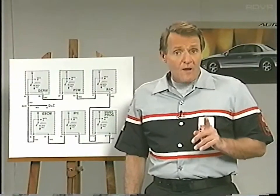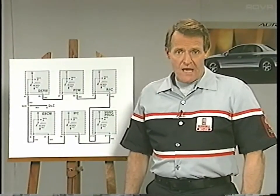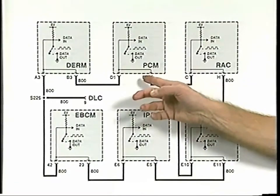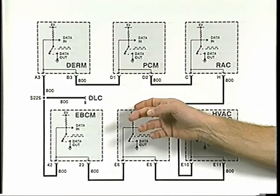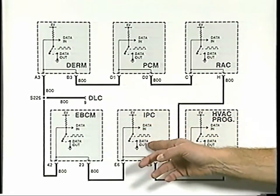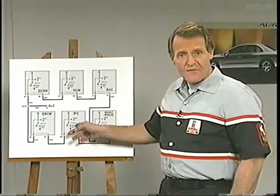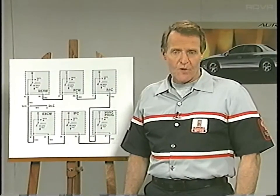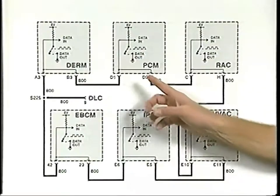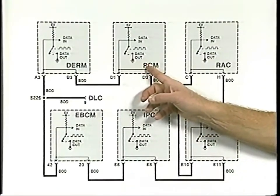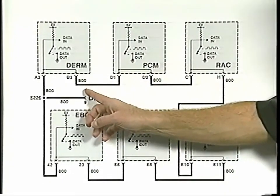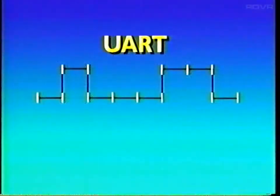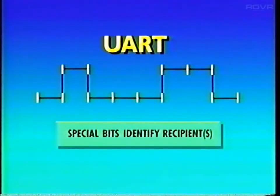In every EWERT line, one module is the designated master of the bus and acts rather like the operator on a telephone line. In this system and most systems, the master is the PCM. In a few vehicles like the 1995 Sunfire and Cavalier, the IPC is the master, while in other systems the IPC isn't even on the EWERT line. In the Toronado, the body control module is the master of the EWERT bus. In all EWERT systems, the master schedules all communications — it requests all messages from other modules, receives and digests them, and distributes the information to whichever other modules need it.